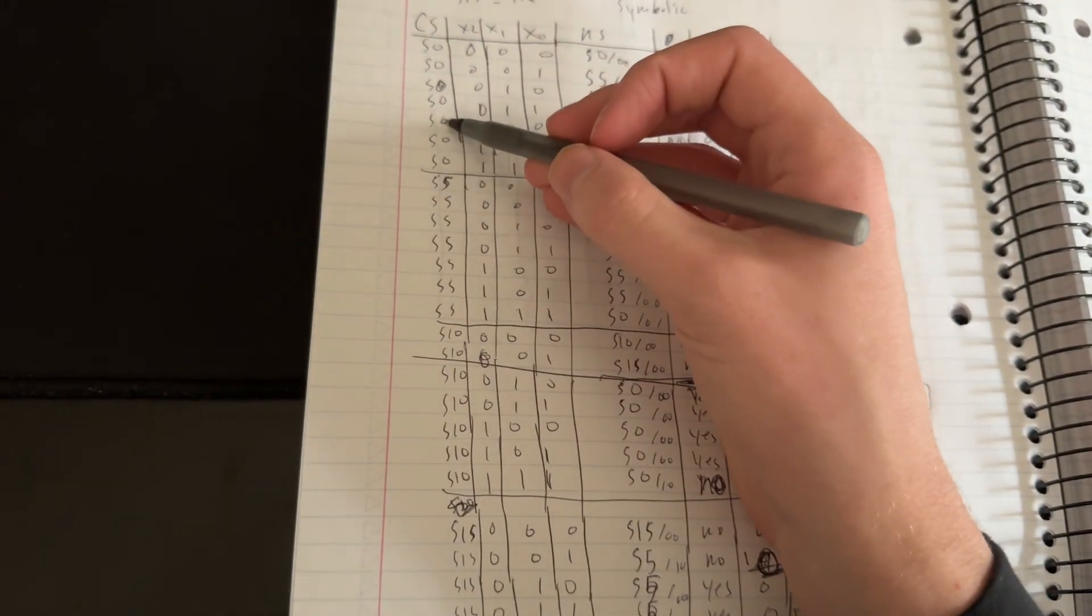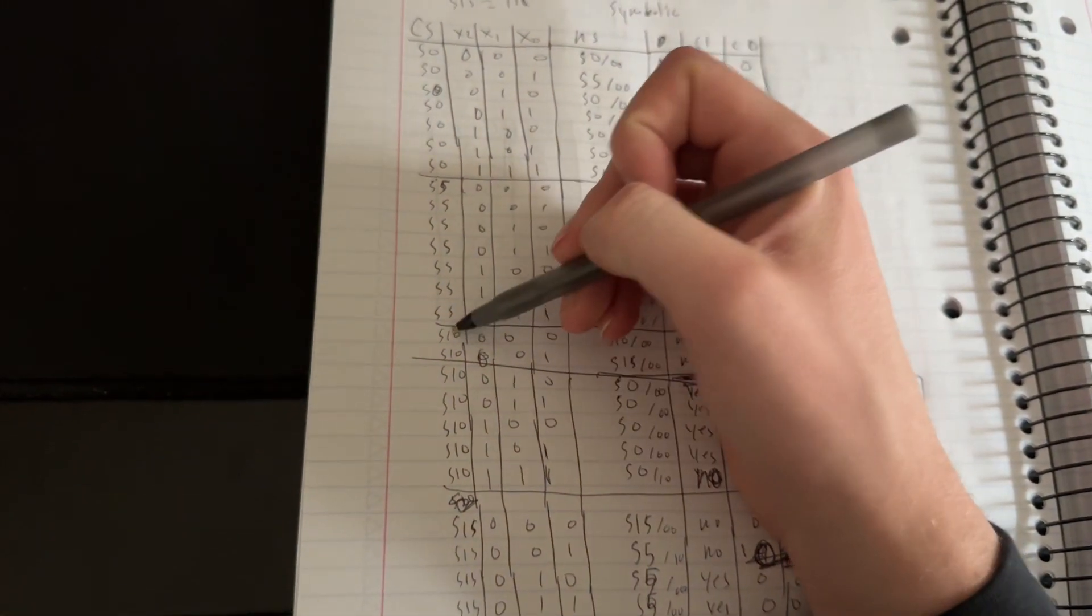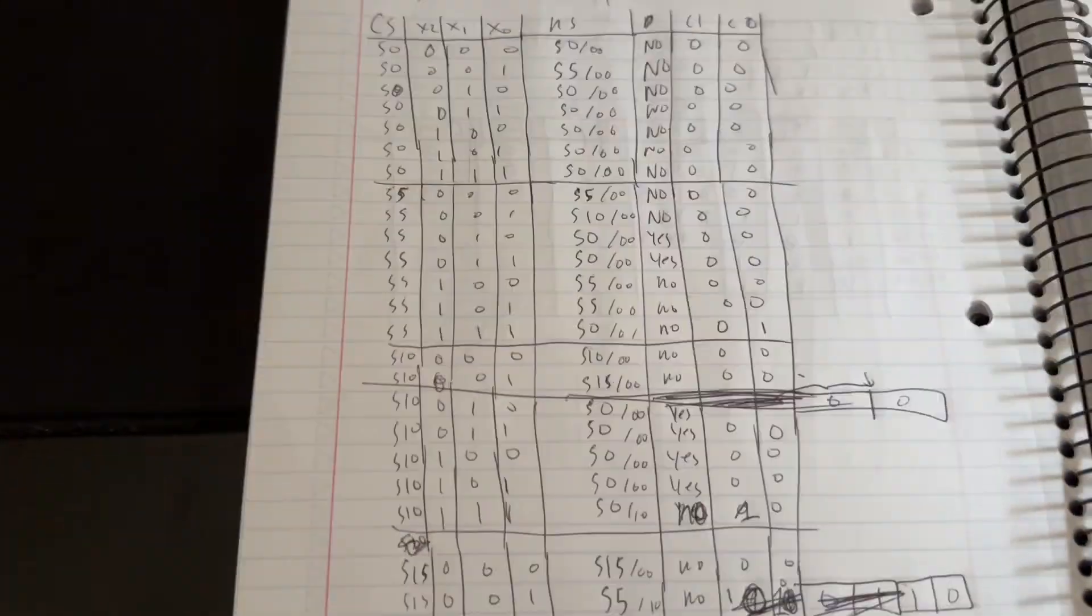I divided them up into fours to represent 0 cents, 5 cents, 10 cents, and 15 cents, respectively.